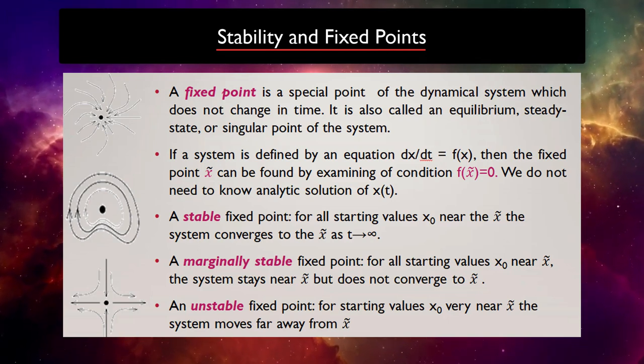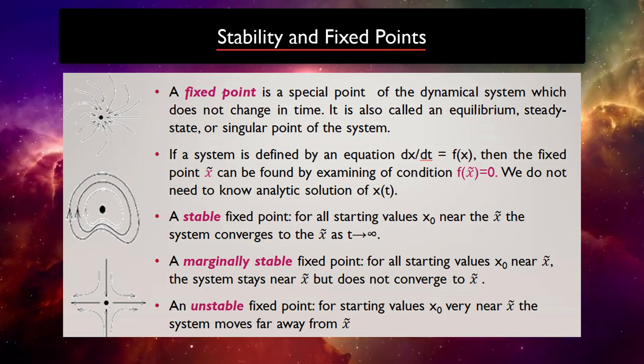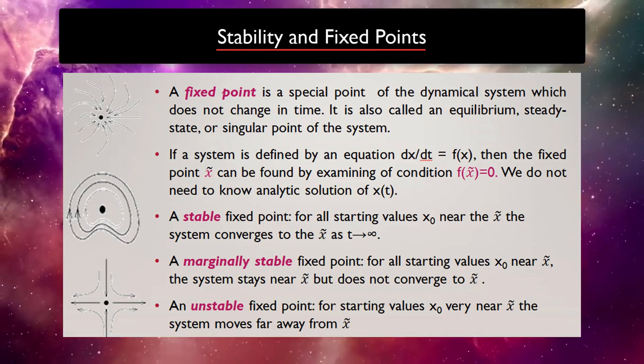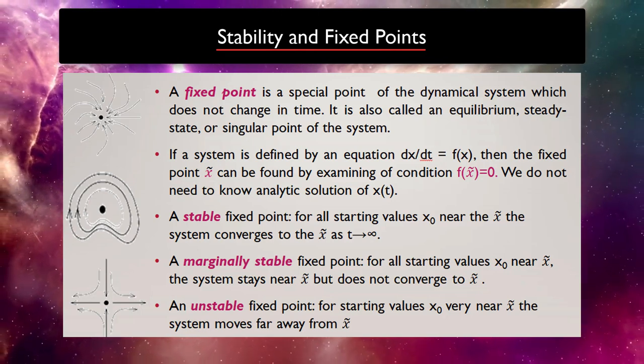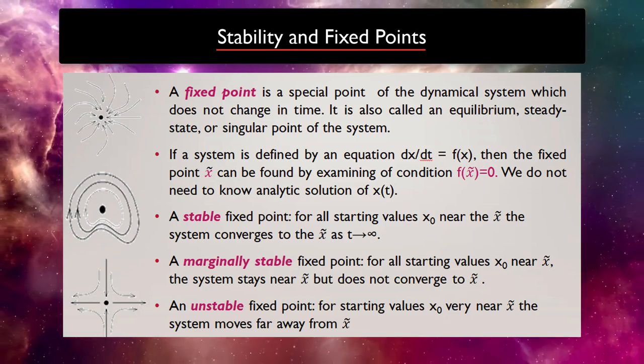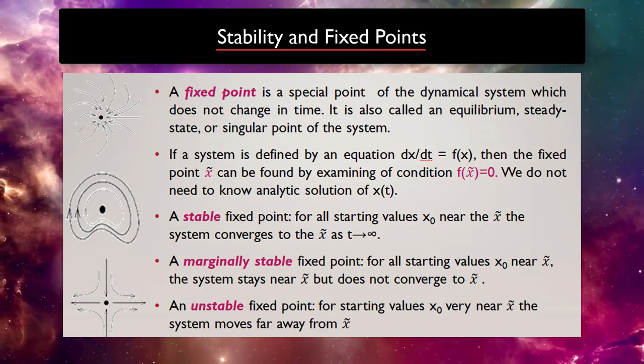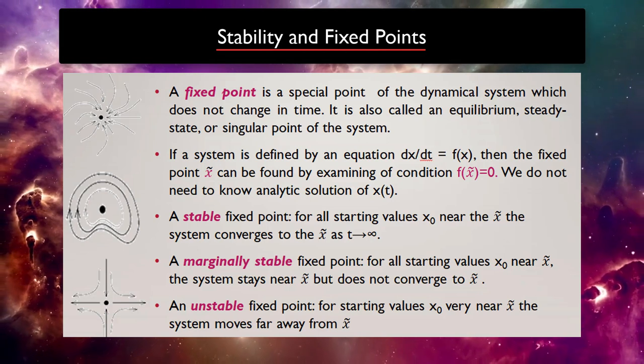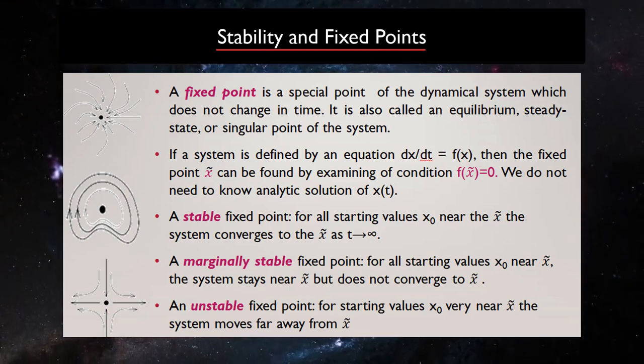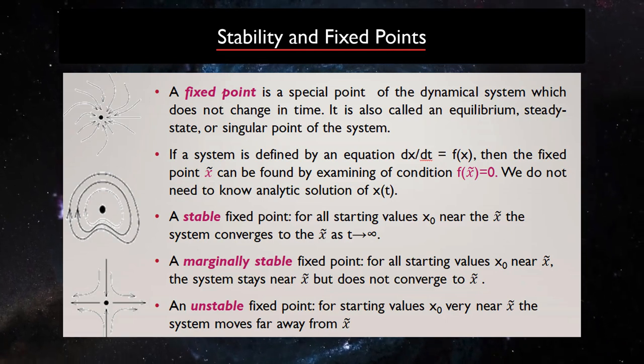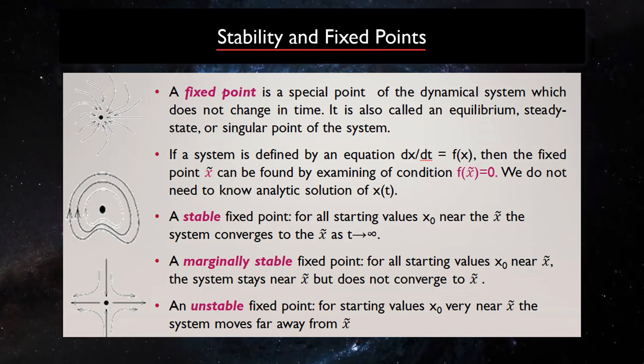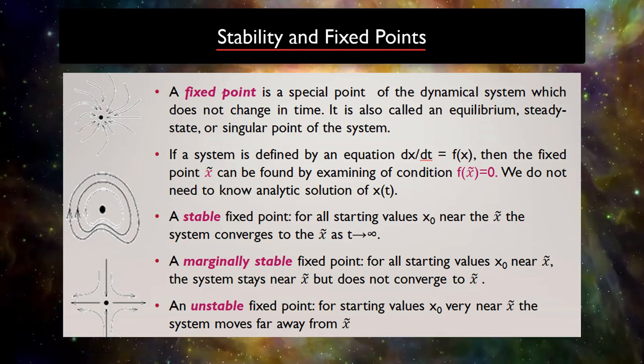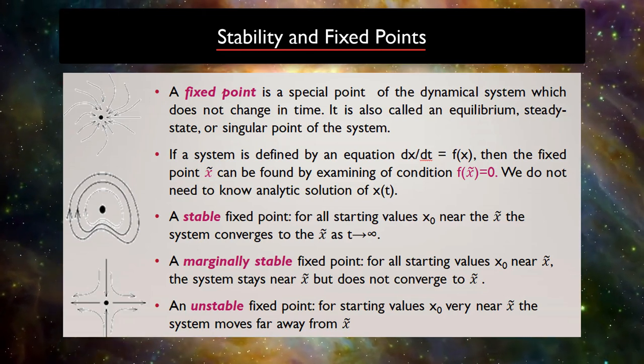We say a fixed point is stable if for all starting values x zero near x hat, the system converge to the x hat as t goes to infinity. Fixed point is marginally stable if for all starting value x zero near x hat, the system moves far away from x hat.